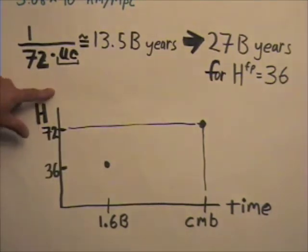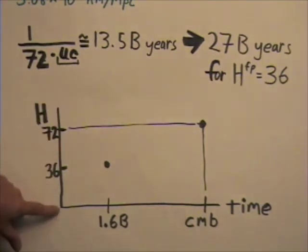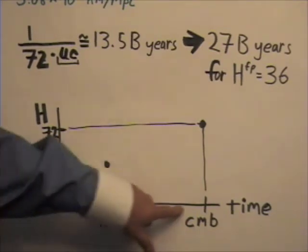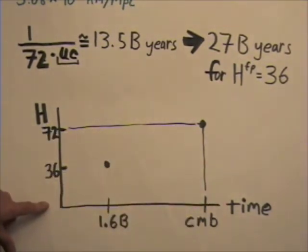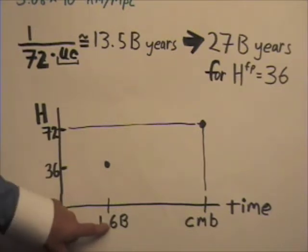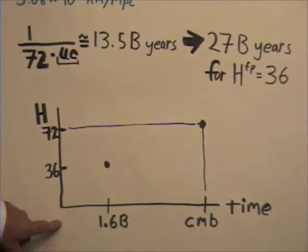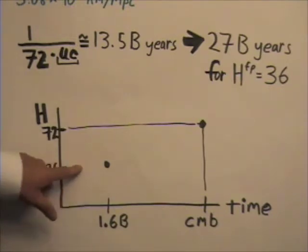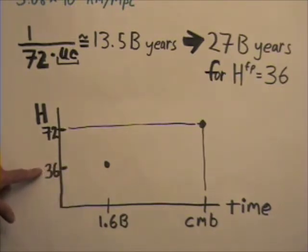So here's a graph with the Hubble constant values on the y-axis and time down here. Now we know that for all times back to at least 1.6 billion years ago, the Hubble constant from first principles is going to be about 36 or in that range, depending on what the data set is that it's calculated from.